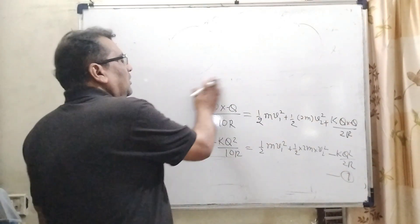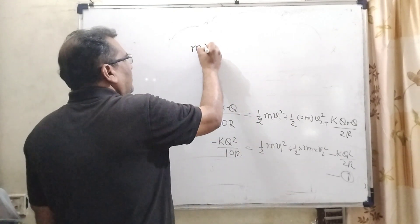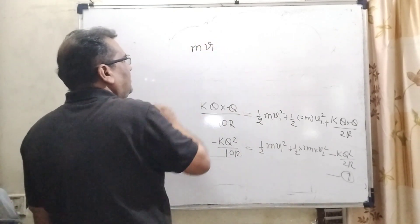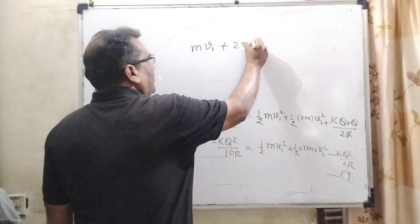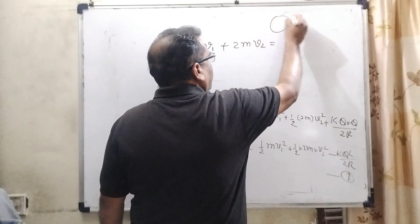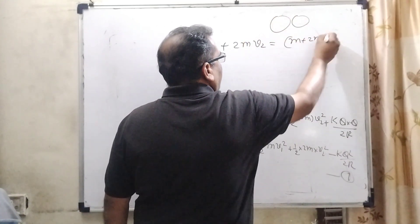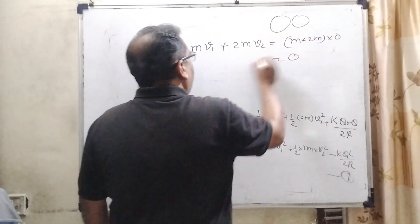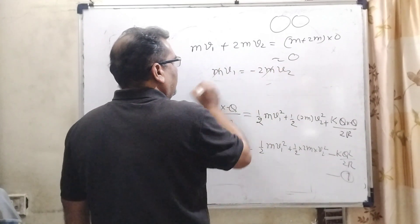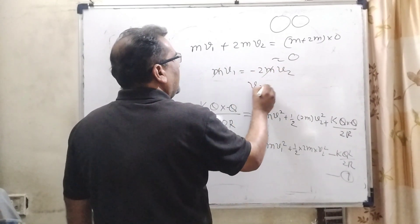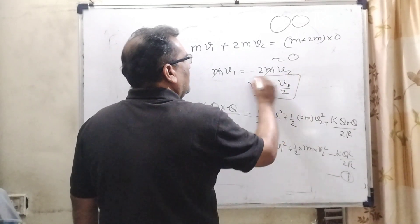Now, for the linear momentum for the first sphere, that is M, velocity is V1 and before striking. So, here, the mass is 2m, velocity is V2 and after they stick together, then the total mass is M and 2m and velocity is 0. So, therefore, M V1 is equal to minus 2M V2, M M cancel out, then V2 can be written as minus V1 upon 2.